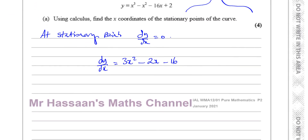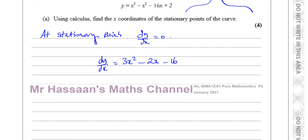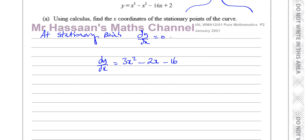Now we have to find the x-coordinates of the stationary points. We need to equate this to zero. We know that dy/dx equals zero, so we put 3x squared minus 2x minus 16 equals zero. We have to solve this quadratic equation and find the values of x for which this is true.